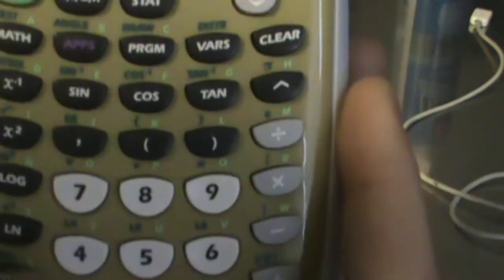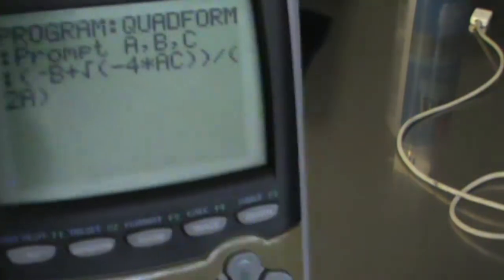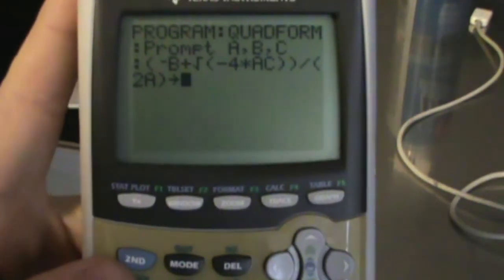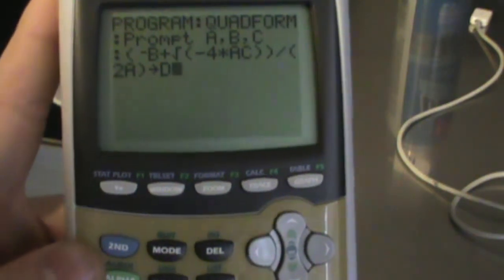And then what you're going to do—this is important right here—we're going to hit store. The store button is located right there. And what it will do is give you an arrow. We're going to store this as D, then hit enter.